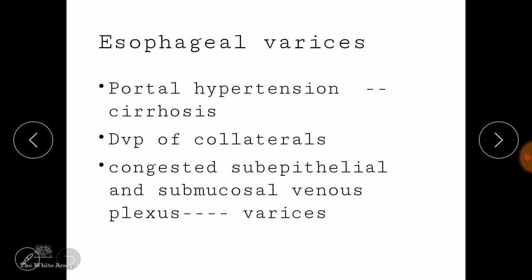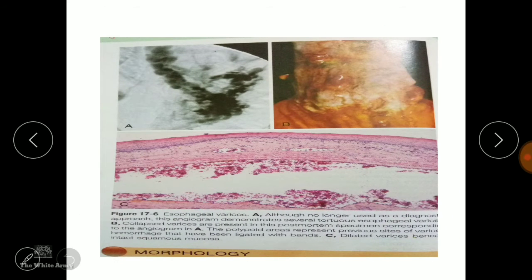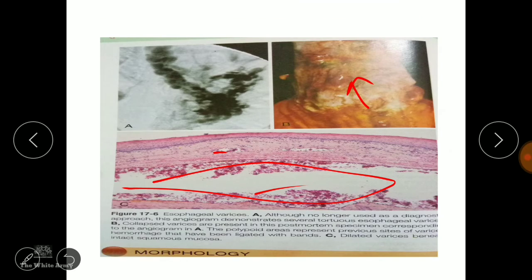There may also be esophageal varices due to portal hypertension. There are collaterals between the esophageal veins and the portal circulation. Whenever there is cirrhosis or hypertension in the liver vessels, the collaterals cause congestion of the subepithelial and submucosal venous plexus, leading to varices with congested vessels.